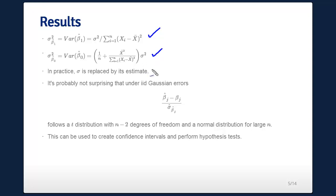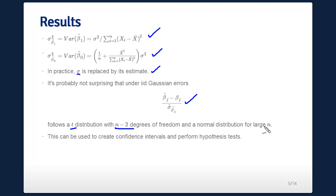Of course we don't actually know σ, so we replace it by its estimate. Under iid Gaussian errors, the expression (β̂ⱼ − βⱼ) divided by its estimated standard error follows a t-distribution with n − 2 degrees of freedom. If you're used to the single-group t-test, we've lost an extra degree of freedom because we estimate one extra thing. For large n it follows a normal distribution, and you can use this to create confidence intervals and perform hypothesis tests.